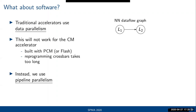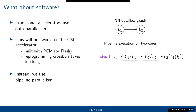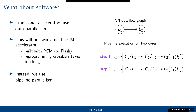Instead, what we want to use is pipeline parallelism. We map the data flow graph of the neural network into the accelerator, execute the first chunk of data on step one, and the second chunk on step two. The functions that run on the cores do not change, which means the matrix in the crossbar remains the same — so we don't have to reprogram the crossbar.